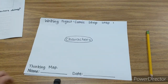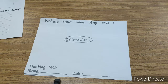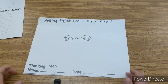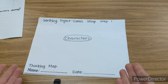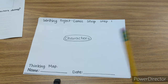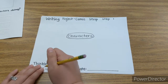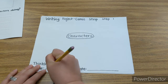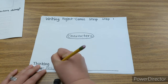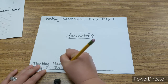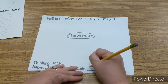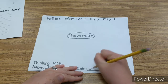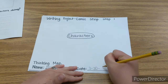Now, boys and girls, as always, what is the very first thing we need to do with our papers? Correct — we need our name and date. So if you happen to be named Lorenzo, write Lorenzo. If you happen to be named Oliver, write Oliver. If Paisley, write Paisley. If Michaela, write Michaela. But my name is Mrs. Jackson, so I'm going to write Mrs. Jackson. And the date that you are doing this activity for Step 1 is going to be 3-30-20.